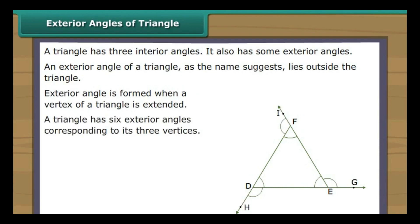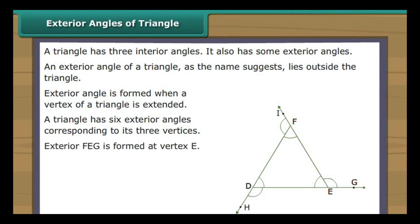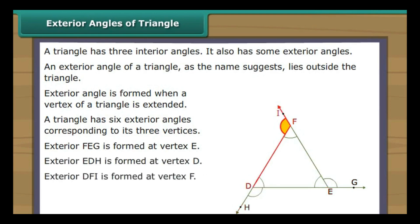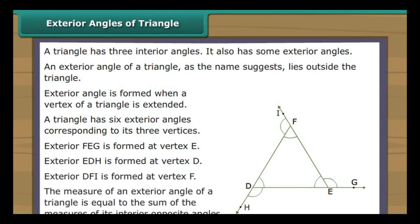If we extend vertex E of triangle FDE, exterior angle FEG is formed. Similarly, when we extend vertices D and F, exterior angles EDH and DFI are formed. The measure of an exterior angle of a triangle is equal to the sum of the measures of its interior opposite angles. So angle FEG is equal to the sum of angles FDE and DFE.